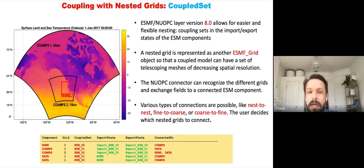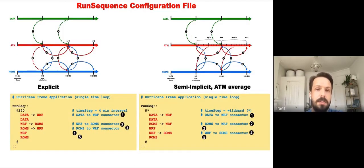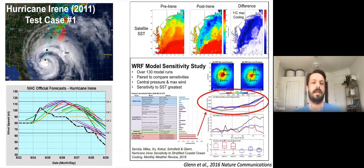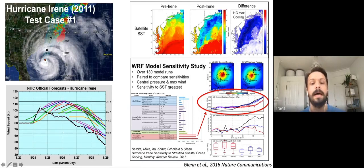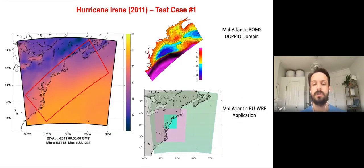Jumping to the science: the Hurricane Irene case has been a classic test case we've worked on since 2011. Hurricane Irene was a strongly coupled ocean-atmosphere storm in the mid-Atlantic — there was 10°C of ocean cooling. We found this cooling happened ahead of the eye of the storm and was responsible for rapid weakening before landfall, so it's an ideal case to test the coupled code.